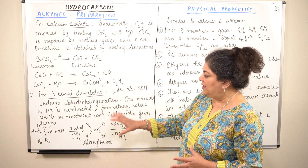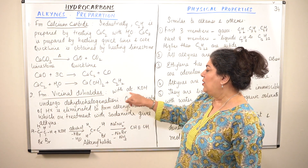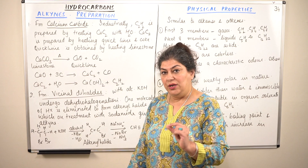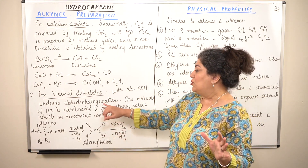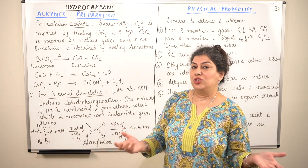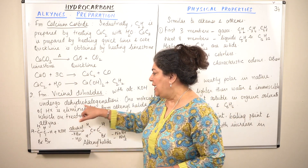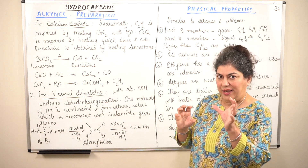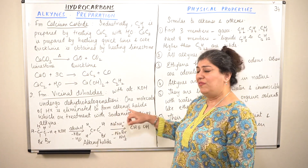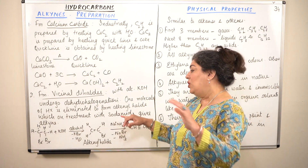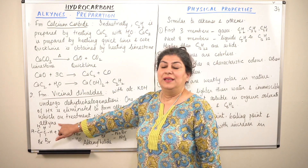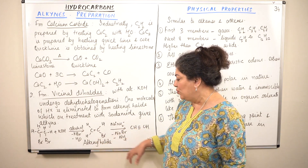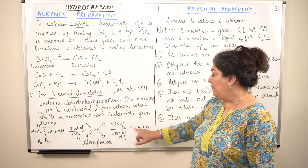Vicinal dihalides with alcoholic potassium hydroxide undergo dehydrohalogenation — hydrogen and halogen are removed. So this reaction is an example of a dehydrohalogenation reaction. One molecule of HX is removed from the vicinal dihalide to form the alkenyl halide, and this alkenyl halide also results in the removal of a hydrogen and halogen, giving you the alkyne.